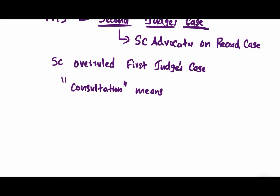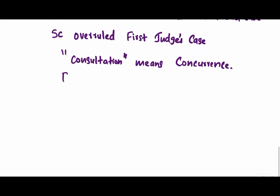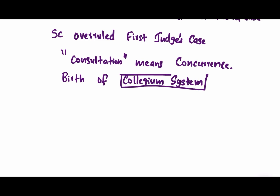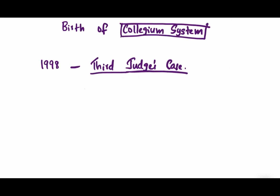The Second Judges' Case paved the way for the birth of the collegium system in India. Hence the collegium system started functioning with the Chief Justice of India and two other senior-most judges of the Supreme Court. However, a difference of opinion arose in 1998 with a special reference from the President to the Supreme Court regarding the word 'consultation'.